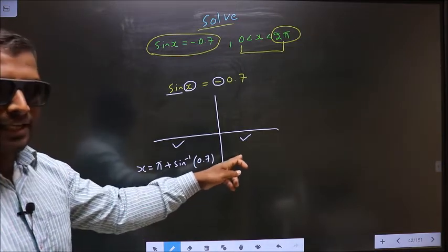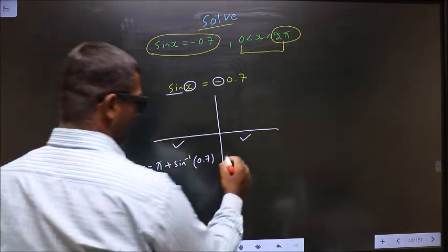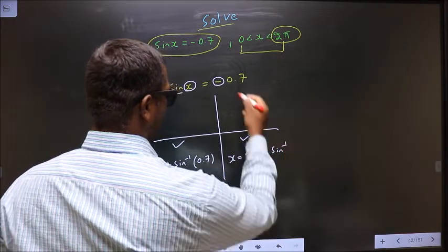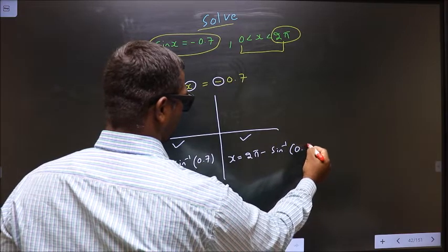Next, to get an angle in the fourth, we should do 2π minus sin inverse 0.7.